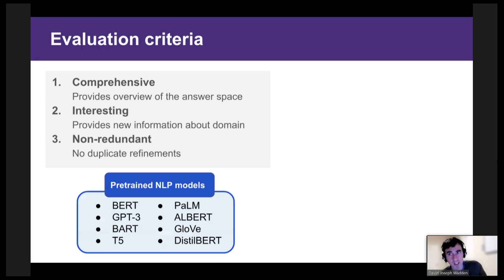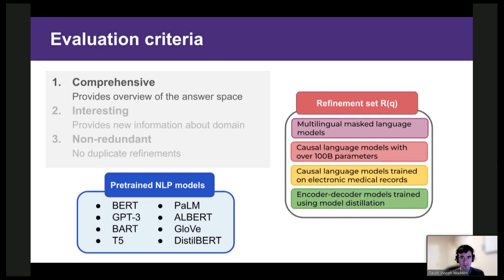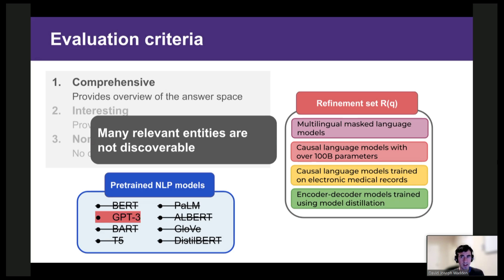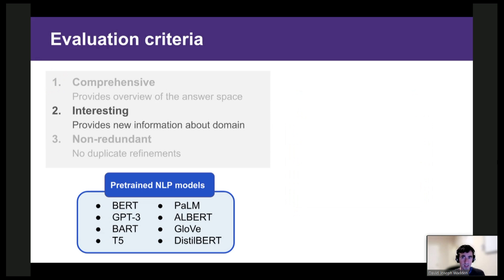We'd like to generate refinement sets which satisfy three criteria. They should be comprehensive, interesting, and non-redundant. And I'll provide some examples. So this refinement set includes multilingual masked language models, causal language models with over 100 billion parameters, etc. The issue here is that most pre-trained NLP models don't fit into any of these categories. So there's lots of relevant entities that won't be discoverable. In other words, these refinements aren't comprehensive.